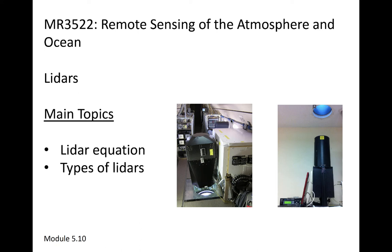This module introduces lidars, which are active remote sensing instruments that transmit visible or near-infrared radiation. As we mentioned in a previous module, for meteorological purposes, lidars are used most often for detection of very small targets, such as small ice crystals, cloud droplets, or aerosols that act as cloud condensation nuclei.